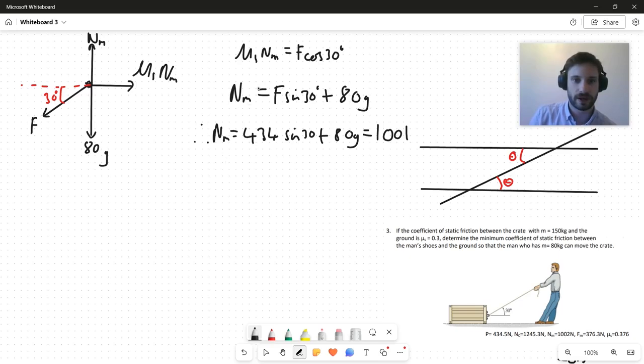Now that I know Nm, I can therefore say that μs... I'm just going to do two steps in one here. I'm going to divide both sides by Nm and I'm going to substitute in this value. So I get μs is equal to 434 cos 30 over 1001. And when I put that in my calculator, I get 0.375, which looks like a reasonable value.